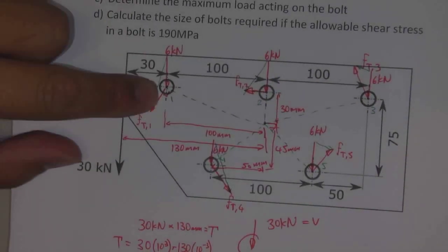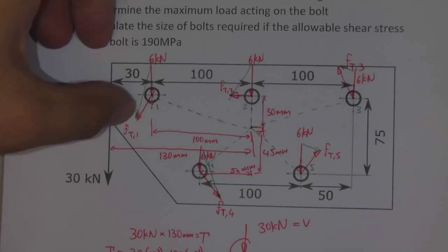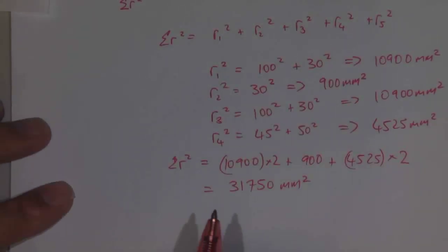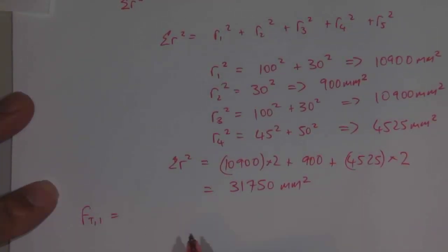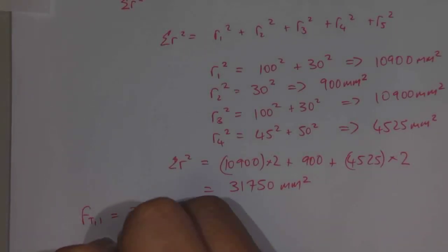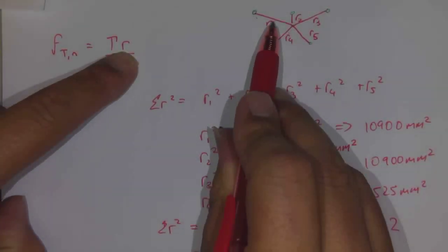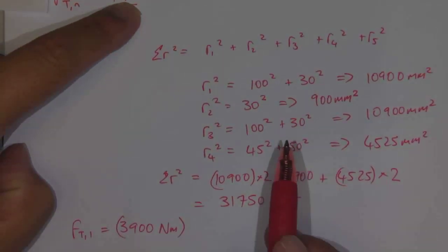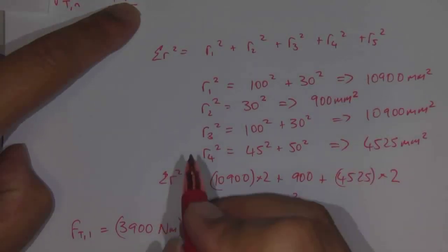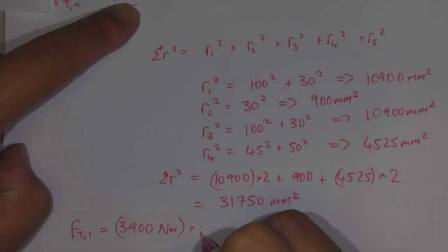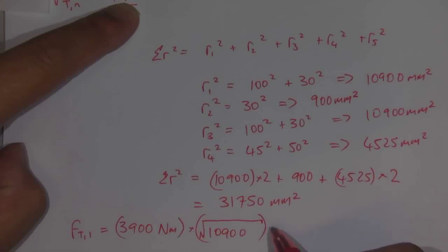Our focus was on bolt number one. So what we can do here is try to find out FT1. FT1 will be equal to the torque that's applied across that section. We found that out to be 3,900 Newton meters, multiplied by the distance R away. In this case, it will be equal to the distance R1. We found out the square of R1 to be equal to this. So here I can write down the square root of 10,900. This will give us a value in millimeters.